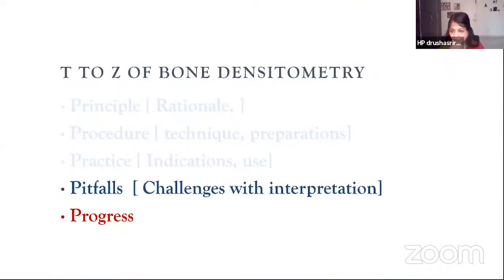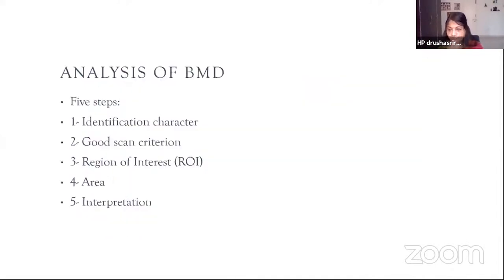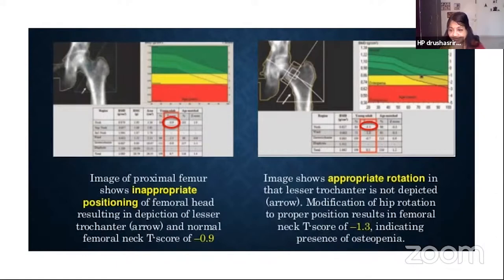Are there pitfalls in DEXA measurement? The ACE 2020 guidelines say accurate BMD scans and reports are crucial for appropriate diagnosis. Consider positioning errors, faulty data input, and inadequate training — examine the DEXA scans carefully. We must consider identification, good scan criteria, and region of interest. An image of the proximal femur shows improper positioning of the femoral head resulting in a lesser trochanter visible and a normal femoral neck T-score of minus 0.9. After appropriate rotation with the lesser trochanter not depicted, proper positioning changed the neck T-score to minus 1.3, indicating osteopenia.